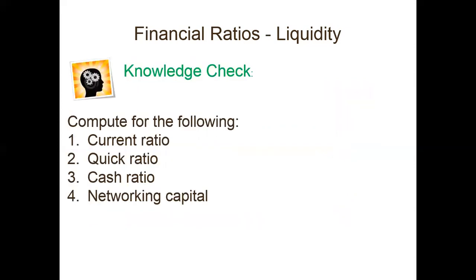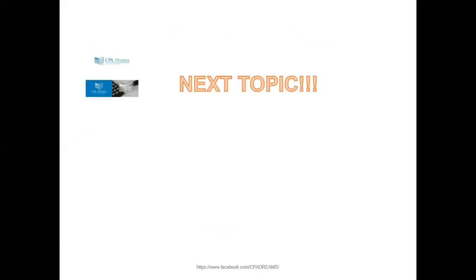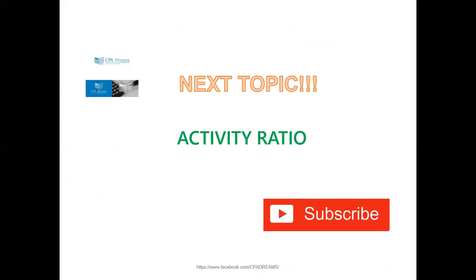For a knowledge check, I want you to get any financial statements available and do the computations by yourself — practice makes perfect. As a recap, we discussed liquidity ratios and the sensitivity analysis of increasing or decreasing the numerator and denominator. Our next topic will be activity ratios. Please don't forget to click the subscribe button so you'll be notified when new video lessons come out. Thank you — please share and tag your friends for this YouTube channel.